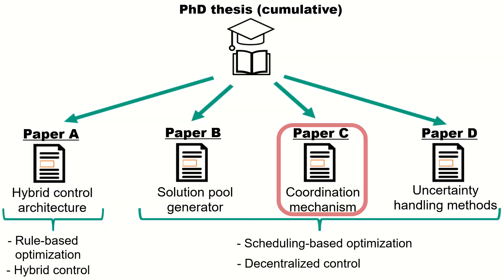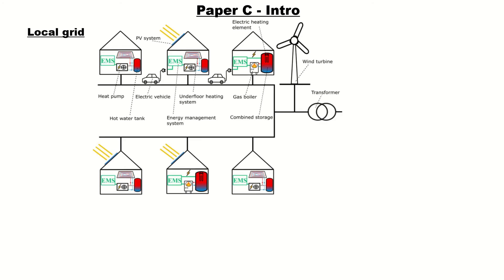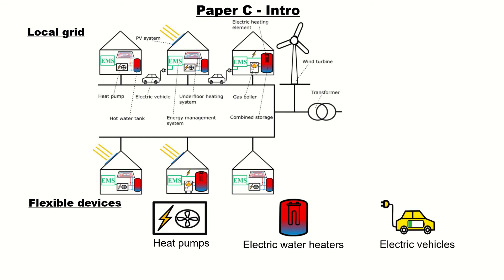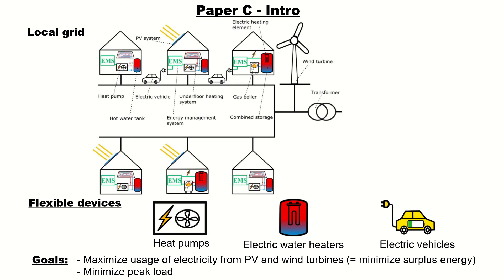Let's have a closer look at paper C, where I developed a coordination mechanism for decentralized optimization. The residential area of paper C consists of different building types — some with PV on their rooftops — and a wind turbine for the local grid. The flexible devices are heat pumps, electric water heaters, and electric vehicles. The goals are to maximize the usage of electricity from PV and wind turbines and to minimize the peak load in the local grid.